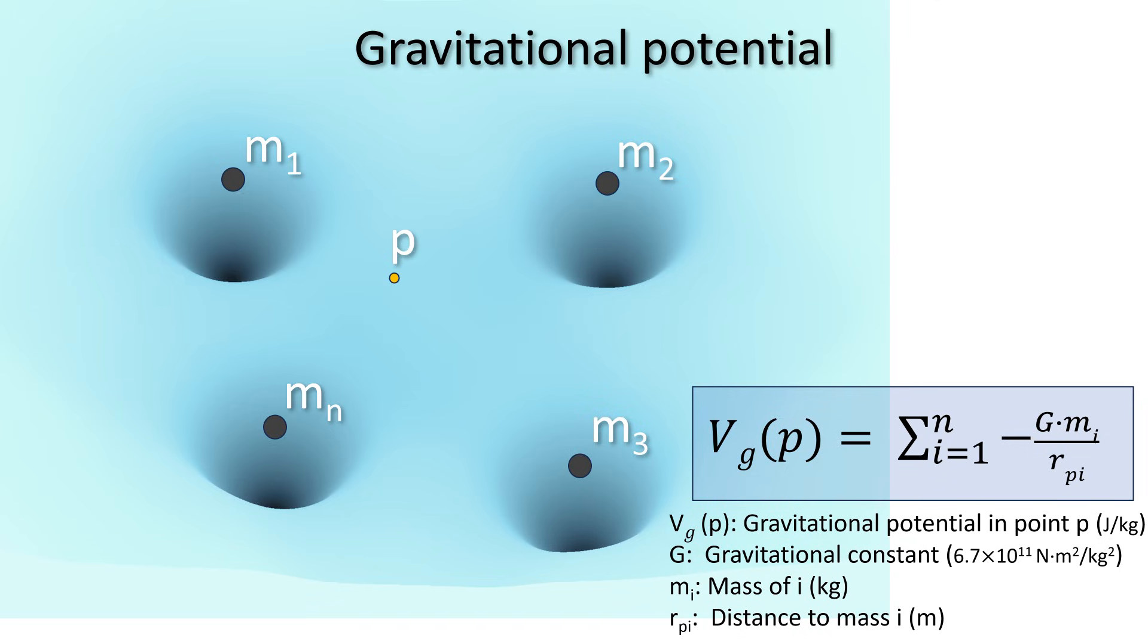In the case of point masses, this gravitational potential is equal to the sum of the contributions by all masses, divided by the respective distances, and corrected for the gravitational constant instead of the Coulomb constant. And you can quickly see that if you get too close to a particular point mass, the contribution of that mass to the gravitational potential goes to strongly negative values, because we are dividing by the distance.